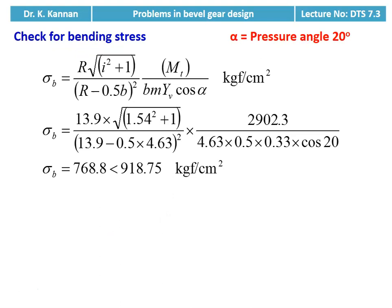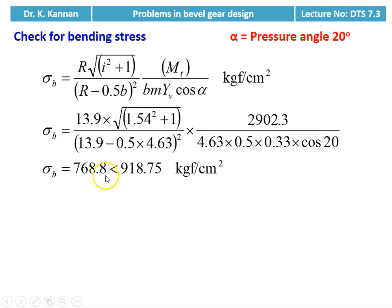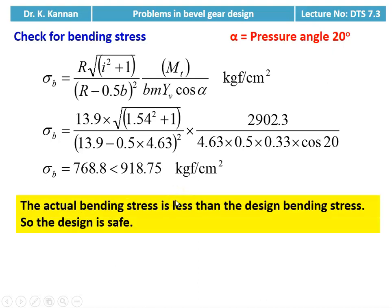Then we check for bending stress with pressure angle = 20°. sigma_b = R × √(i² + 1) / (R − 0.5b)² × MT(design) / (b × m × Yb × cos(alpha)). Substituting: 13.9 × √(1.54² + 1) / (13.9 − 0.5 × 4.63)² × 2902.3 / (4.63 × 0.5 × 0.33 × cos(20°)). Actual bending stress = 768.8 kgf/cm², which is less than design bending stress of 918.75 kgf/cm². The actual bending stress is less than the design bending stress, so the design is safe.